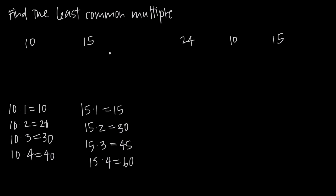So when I say I want to find the least common multiple of two numbers — for example, the least common multiple of 10 and 15 — I'm looking for the smallest number that matches between these two sets. And what I can see is that that's going to be 30. 30 is the smallest number that 10 and 15 divide into evenly, because 30 is a multiple of both 10 and 15, and there's no number smaller than 30 that 10 and 15 both go into evenly.